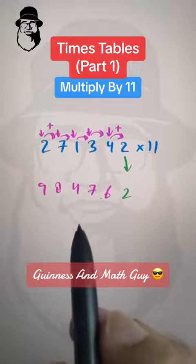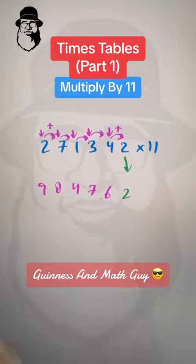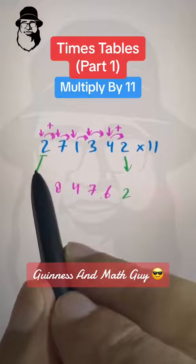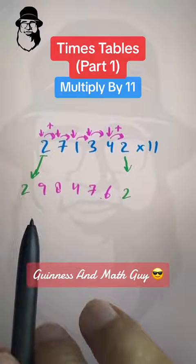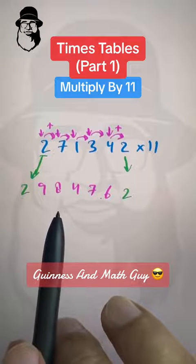Now, the last rule. The third rule is bring down the leftmost digit as it is. So our answer is 2984762.